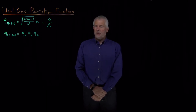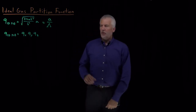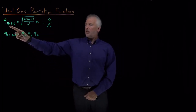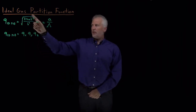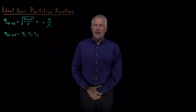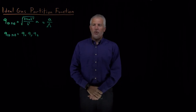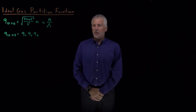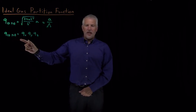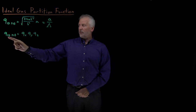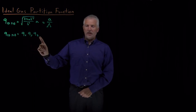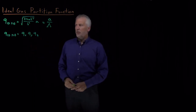The next step is to combine two things we've obtained so far and use them to learn something about ideal gases. We found that the partition function for a one-dimensional particle in a box involves constants related to the thermal de Broglie wavelength multiplied by a box size. We also know that because the energies for the x, y, and z dimensions add together, the 3D partition function is just the product of the one-dimensional partition functions in each direction.